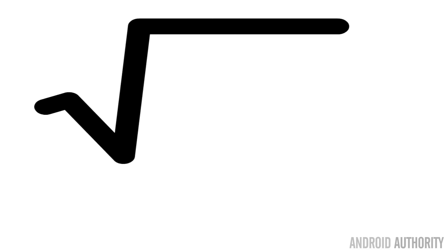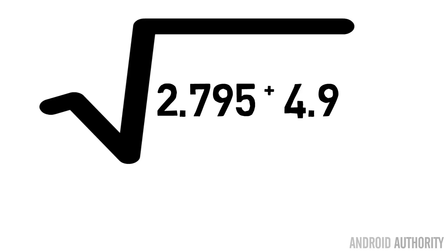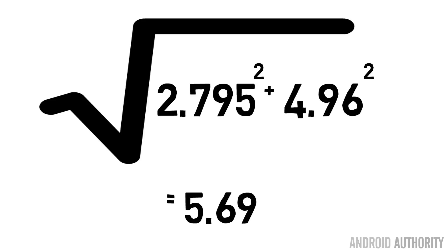If we look at the Galaxy Note 5, we'll see that across here the display is 2.795 inches and its height is 4.95 inches. If you do a bit of Pythagoras — square the width and the height and take the square root — what you actually get is 5.7 inches.